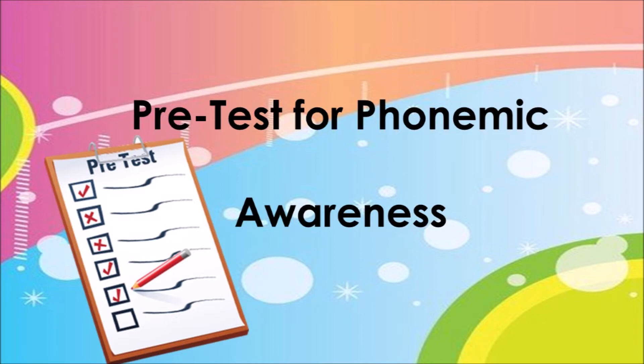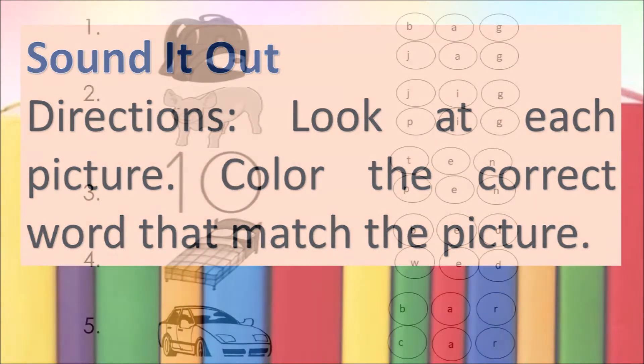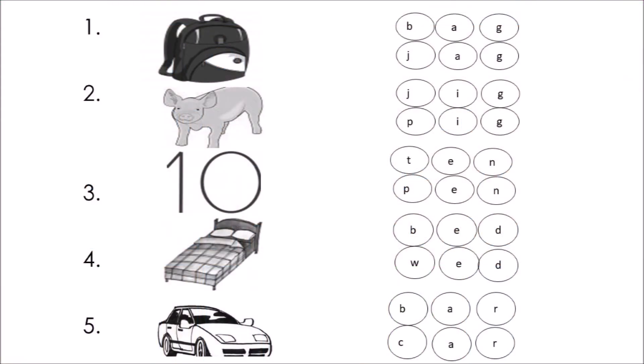Now, let's have the pre-test for phonemic awareness. Let's sound it out! Directions: look at each picture and color the correct word. Number one — the picture is a bag. Spell bag. Choices are B-A-G and J-A-G. Number two is a pig. Spell pig. Choices are J-I-G and P-I-G.